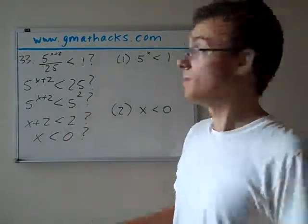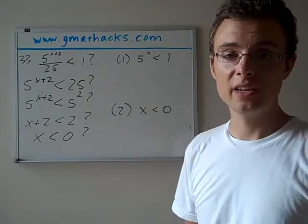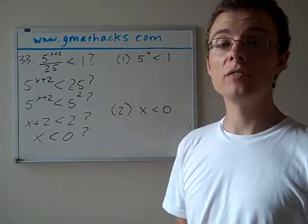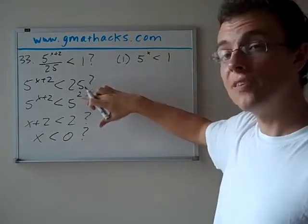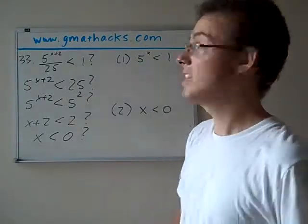So let's look at statement 1. Statement 1, again, looks a little complicated, maybe not something you have an intuitive sense of. So again, remember this step right here, when we went from 25 to 5 squared, we tried to make both sides of the inequality look the same.